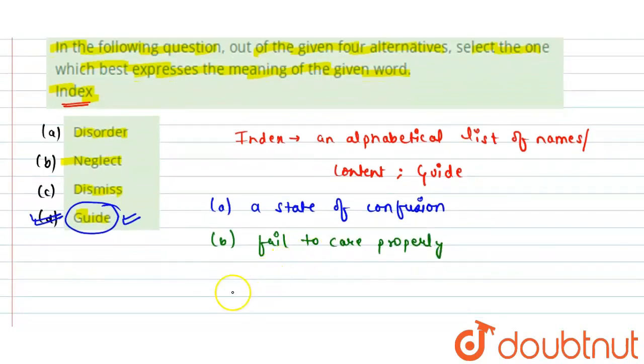Option C is dismiss. Dismiss means send away. Dismiss, we can say, send away.